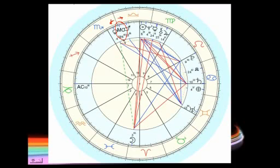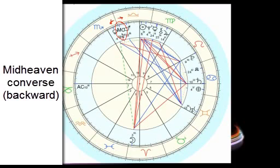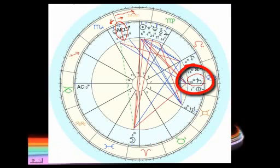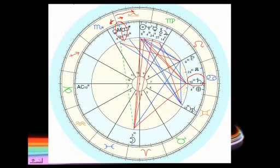Mars converse, if we go backwards, is going to square Saturn at age 18. Now, this had better work, because that's a biggie. Saturn in Cancer, ruler of this man's ascendant in the seventh house. What would I ask the client when the midheaven, by converse progressions, triggers that square at age 18?